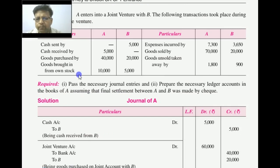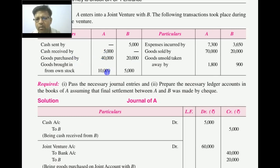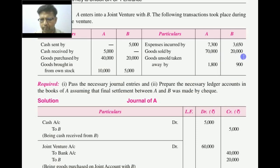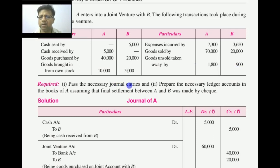Suppose A entered into a joint venture with B and the following transactions took place: goods sent by B, cash received by A, goods purchased by A and by B, goods brought from own stock, and accounts made on joint venture. Goods sold, goods unsold taken away by A and B. We are going to pass entries and prepare a ledger account in the books of A, assuming final settlement is made by cheque.